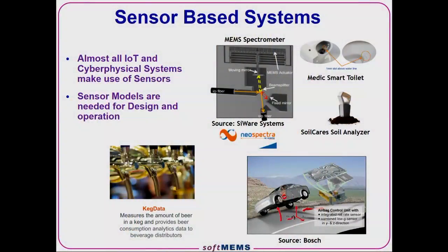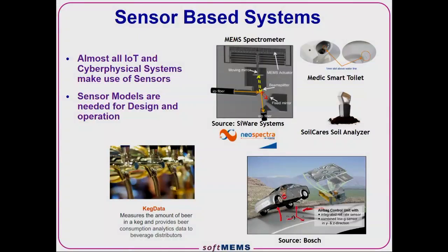Some of the applications include the MEMS-based smart toilet to analyze urine, a soil analyzer so a farmer can automatically analyze their soil with a handheld instrument linked to their iPhone, and more traditional applications like a Bosch airbag system. Bosch is the number one maker of MEMS in the world, and your life depends on MEMS through chips created in the automobile industry.